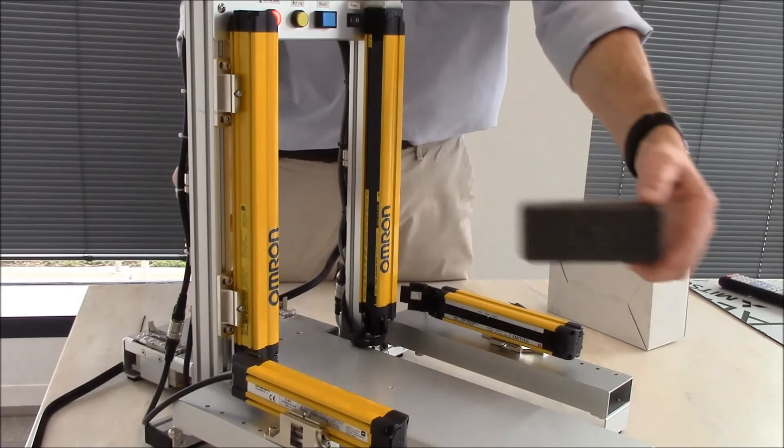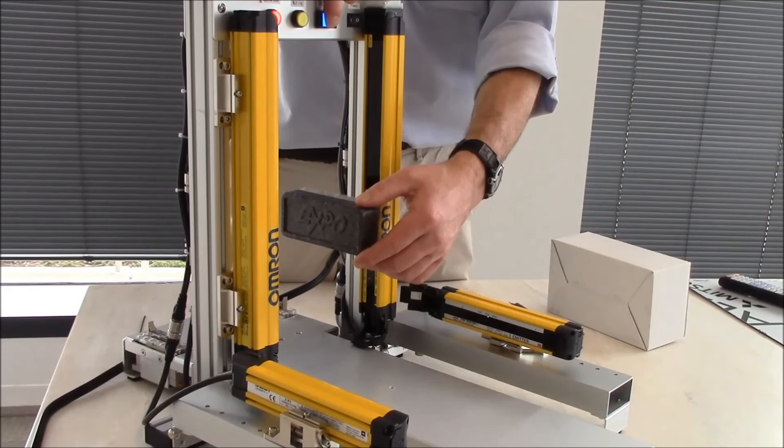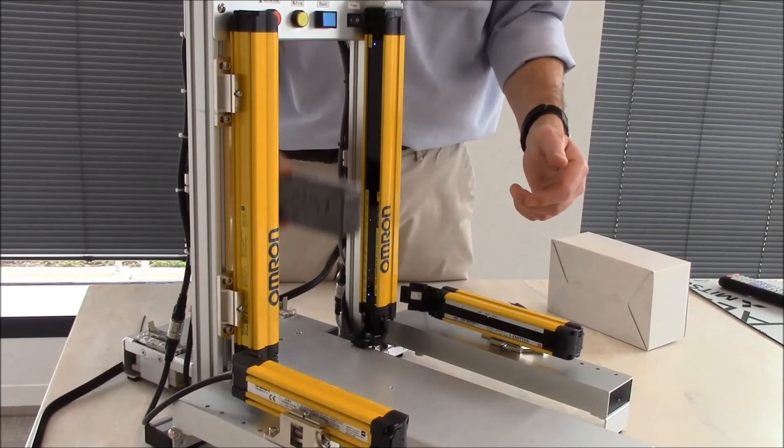Now if I remove the object and re-enter it into the field, I do need to hit reset for 3 seconds to re-enable it. Now I have the condition re-enabled.